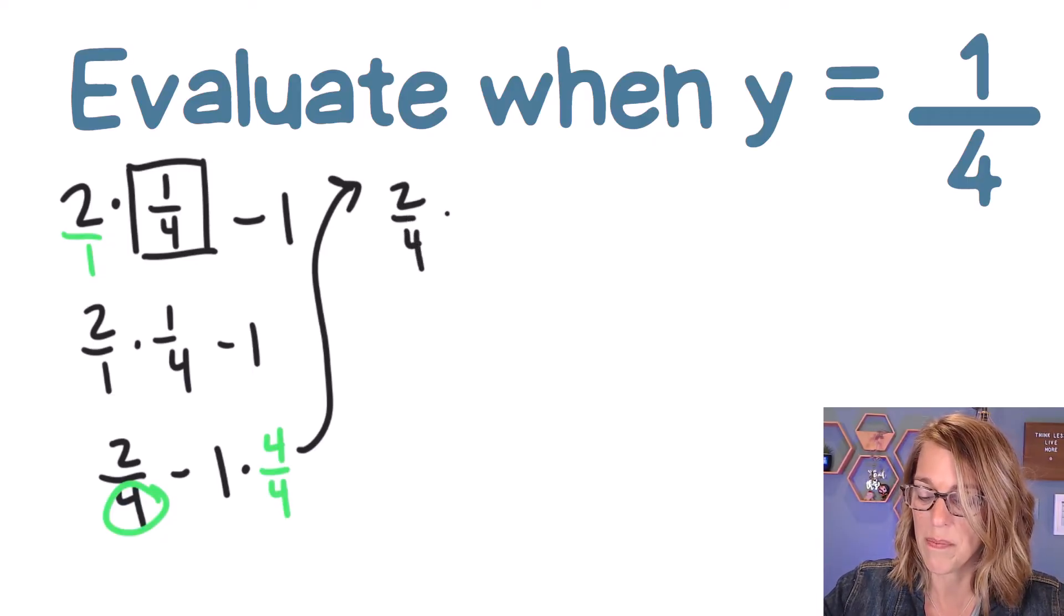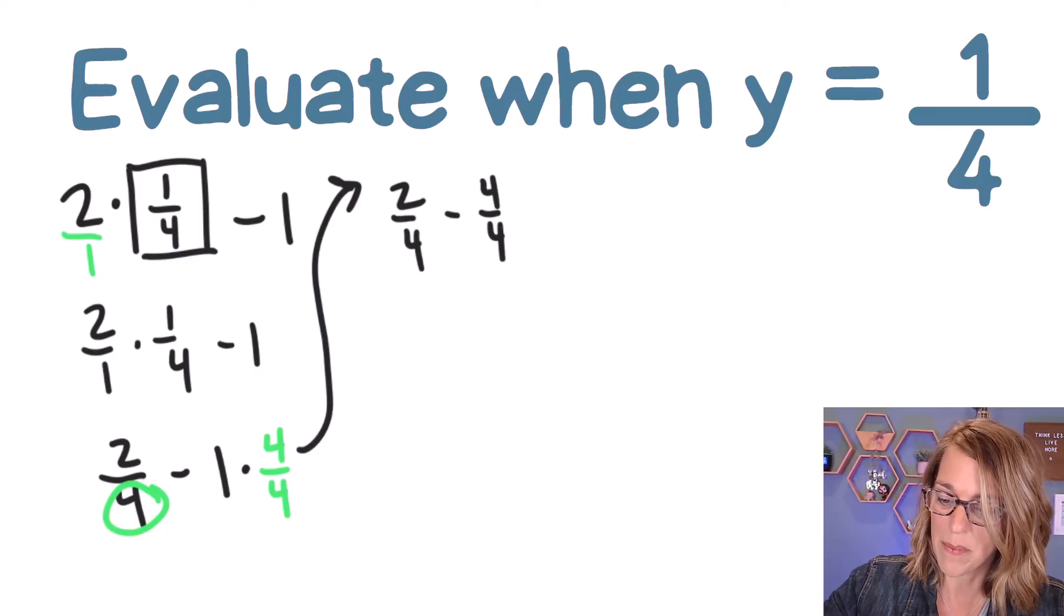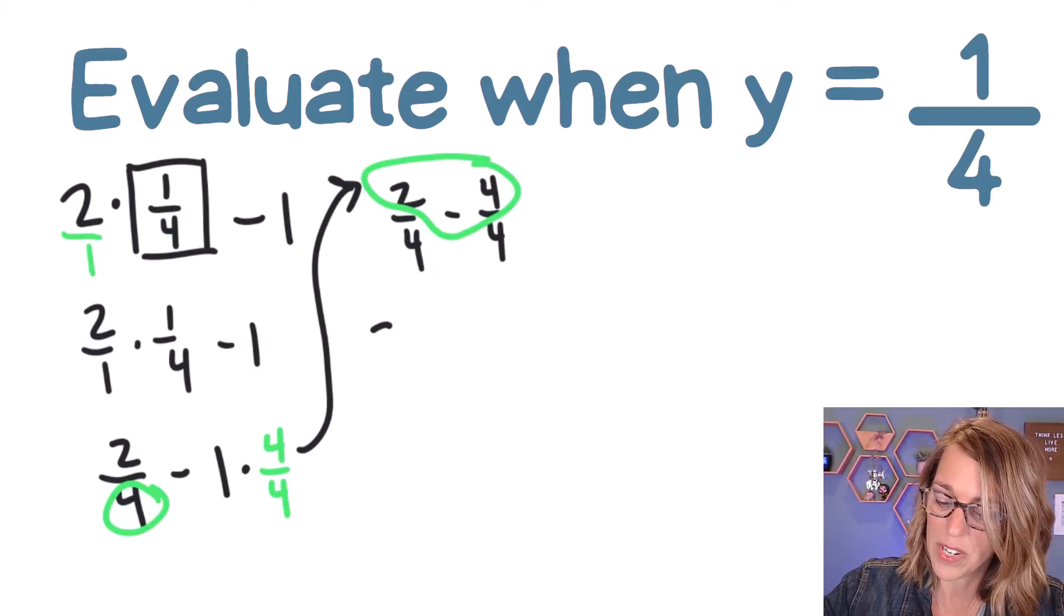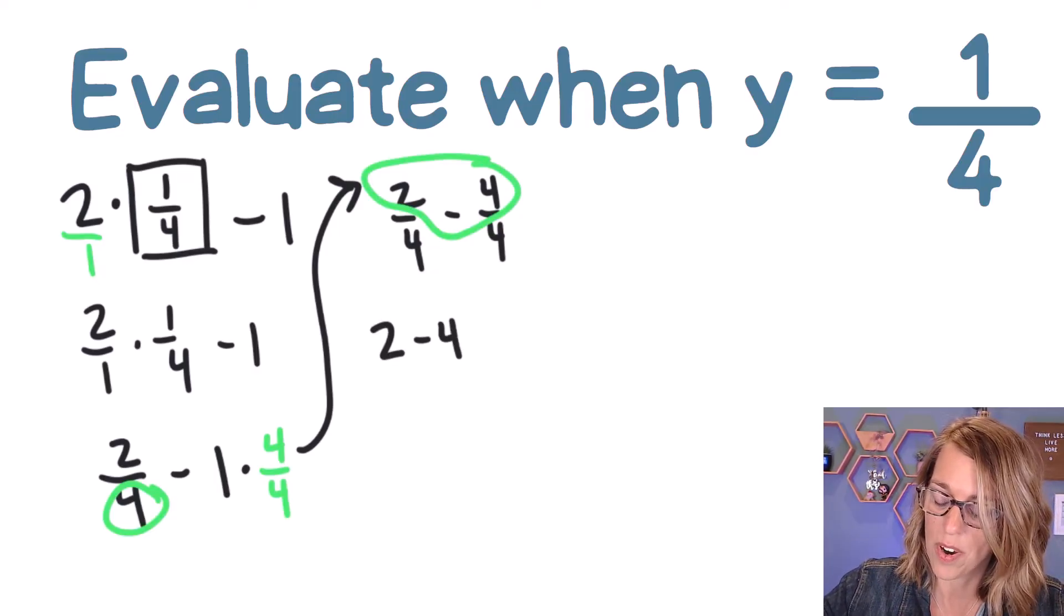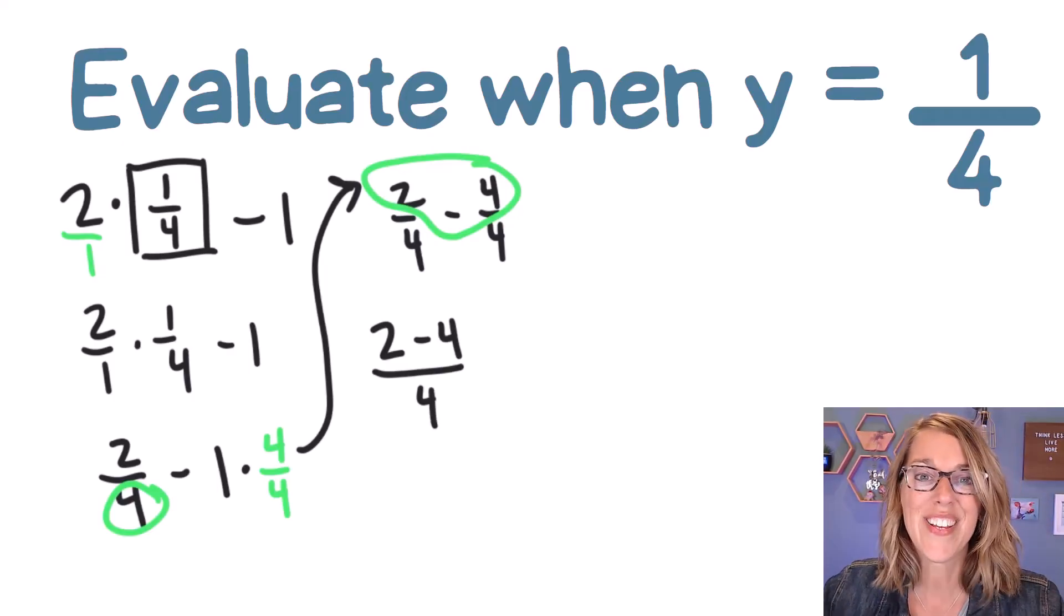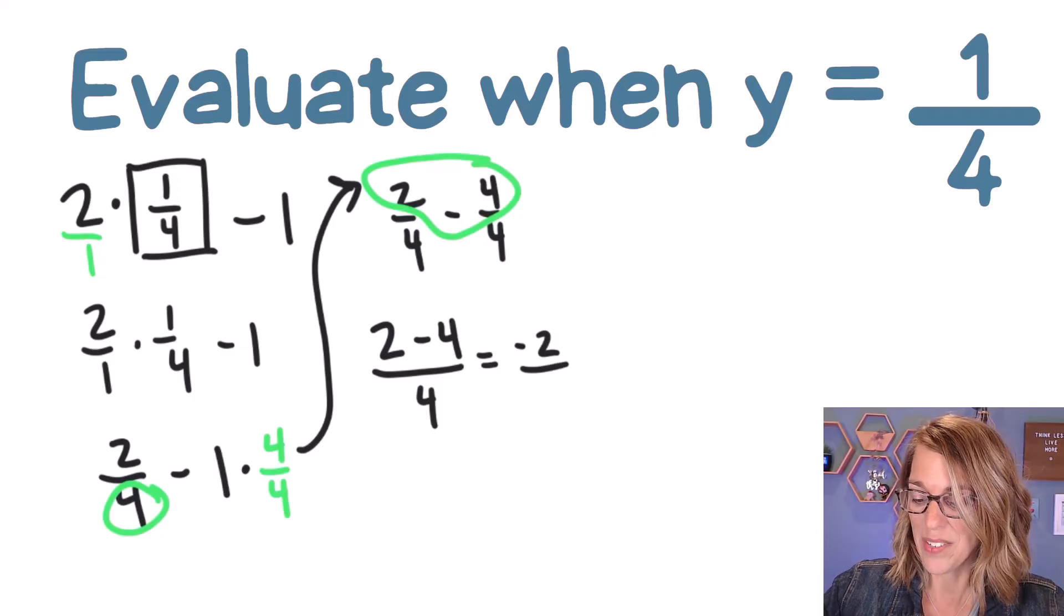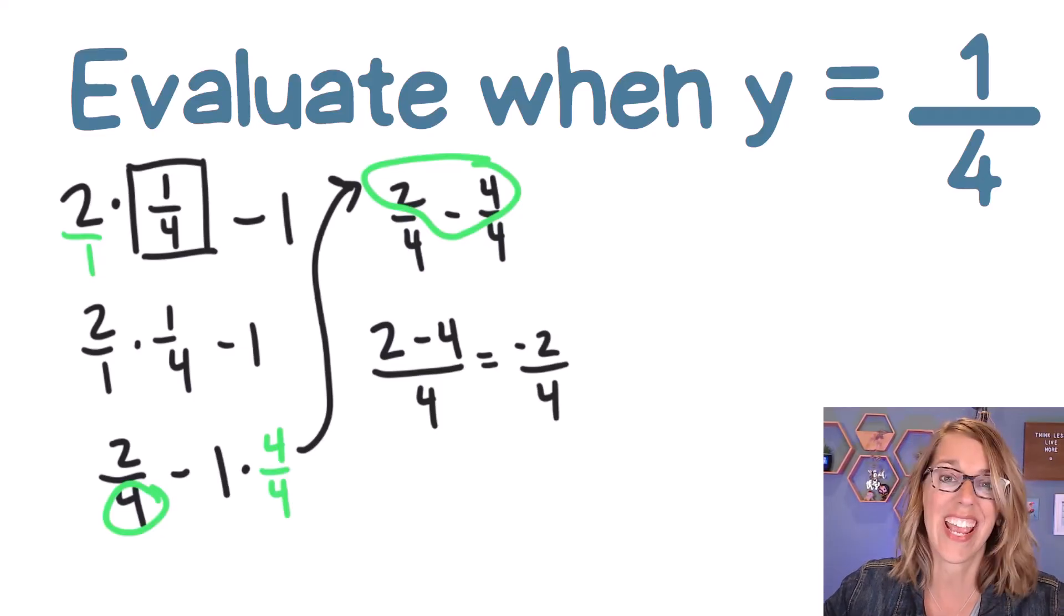Now I've got 2/4 minus 4/4. As I am combining these, I collect my numerator, and that's going to give me 2 minus 4, all divided by 4. Now I'm just about there. 2 minus 4 is negative 2, divided by 4, and I can cancel.